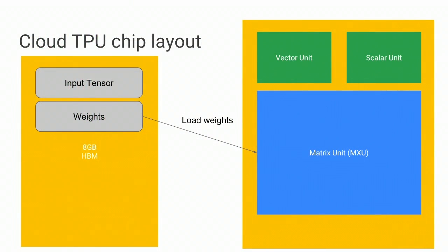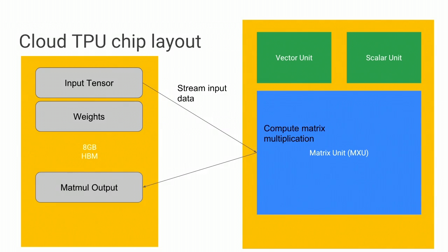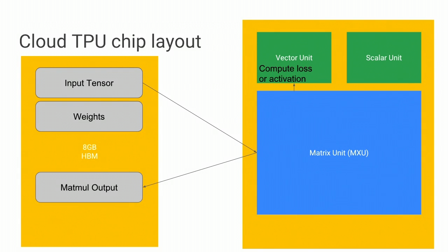Now that we know about the chip, let's dig into what actually happened in our linear regressor program on a TPU. The first step is we load the weights into our matrix multiply unit. After that we stream through our training data into the matrix multiply unit, compute the matrix multiply, and stream the output out. XLA is actually able to, in parallel, stream the values into the vector unit, compute the loss or activations or whatever operations your model requests, and stream those values out in parallel — giving really high performance and taking full advantage of all the chip's capabilities.